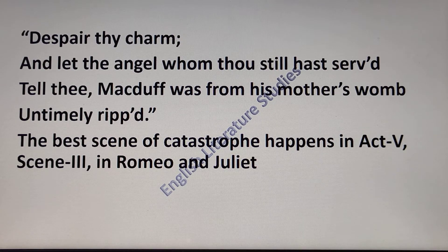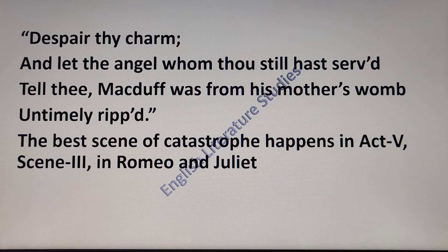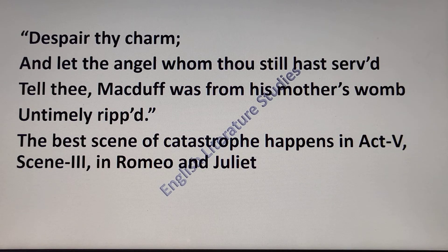These lines from Macbeth present a perfect example of catastrophe — they involve the death of the primary character as Macbeth falls in a mortal fight with Macduff, a man he has wronged. Another example is from Romeo and Juliet, again by Shakespeare. The best scene of catastrophe occurs in Act Four, Scene Three, in which the fall of Paris and the two lovers occurs, and after the tragic conclusion the story ends with the death of the star-crossed lovers.